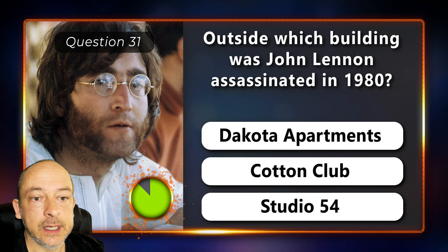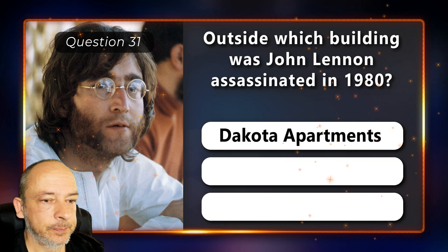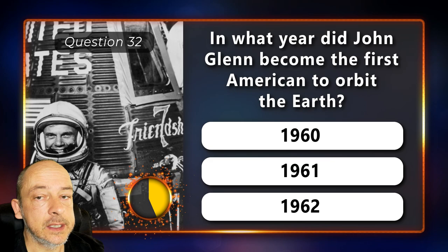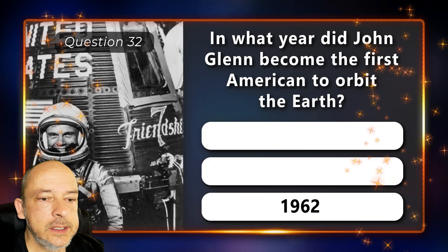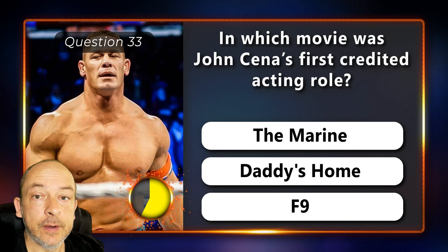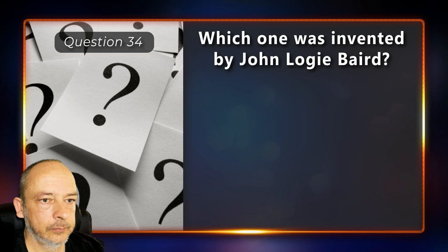Question 31: Outside which building was John Lennon assassinated in 1980? The Dakota Apartments, the Cotton Club or Studio 54? The Dakota Apartments. Question 32: In what year did John Glenn become the first American to orbit the Earth? 1960, 1961 or 1962? 1962. Question 33: In which movie was John Cena's first credited acting role? The Marine, Daddy's Home or F9? The Marine.